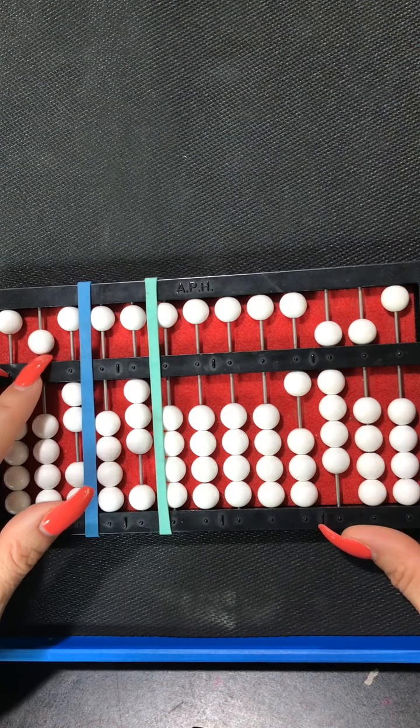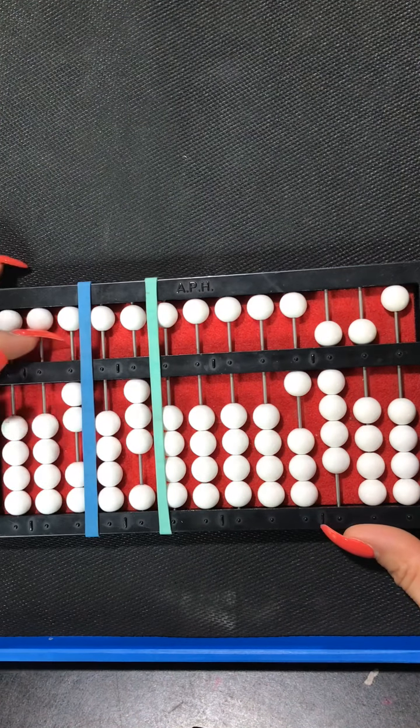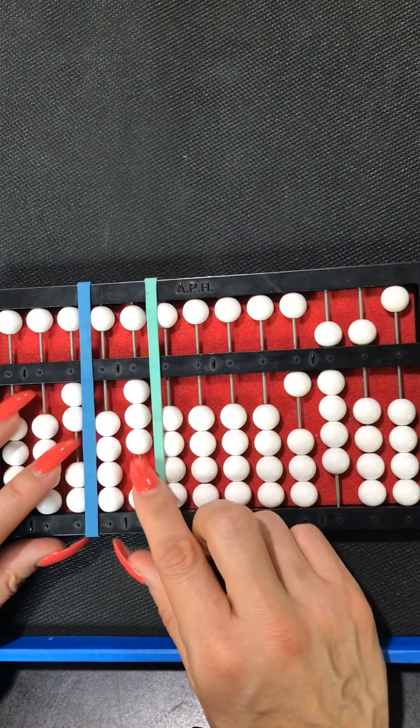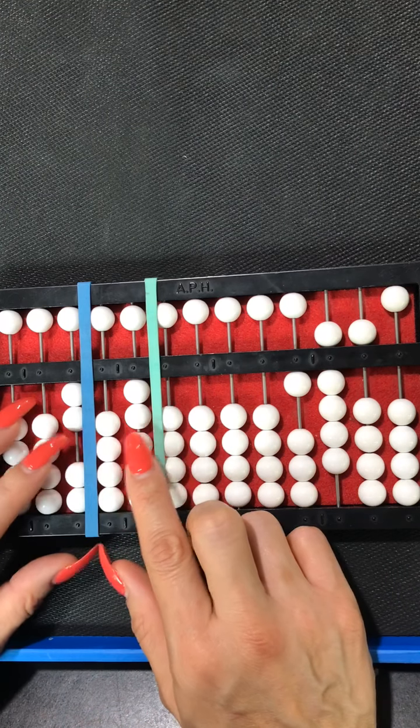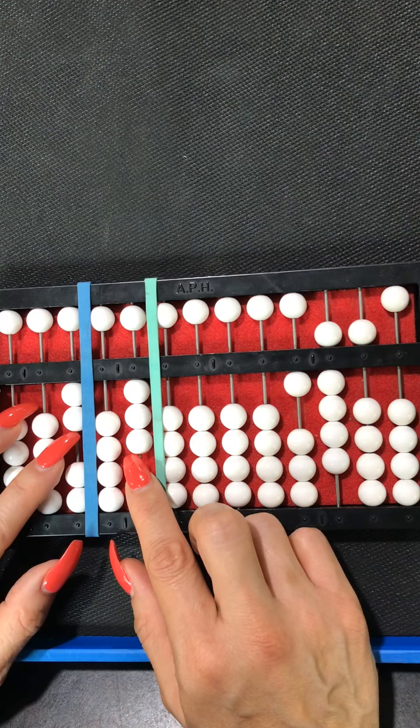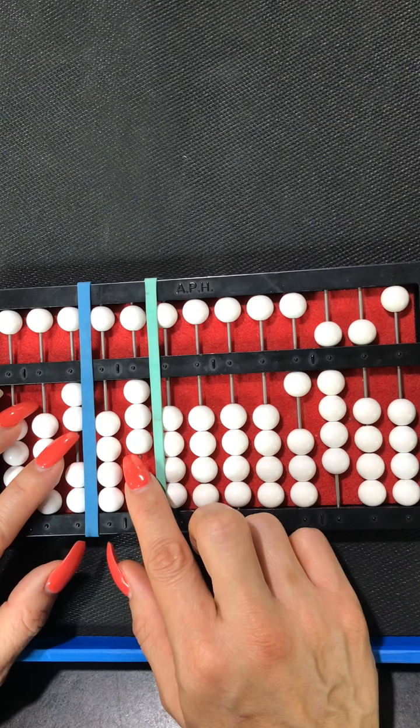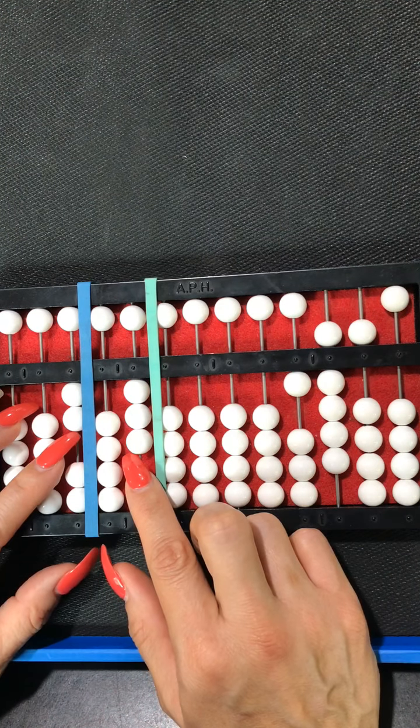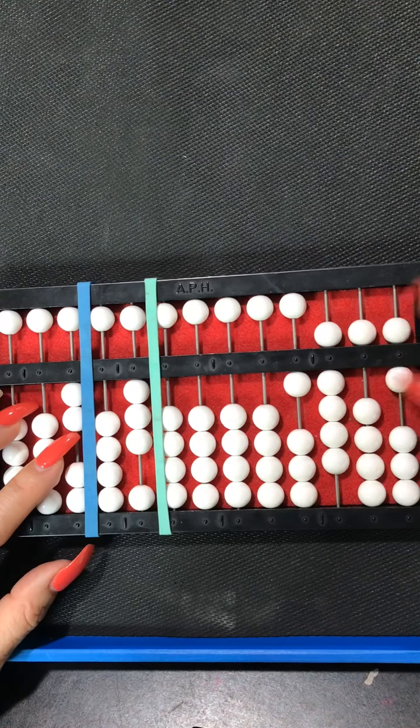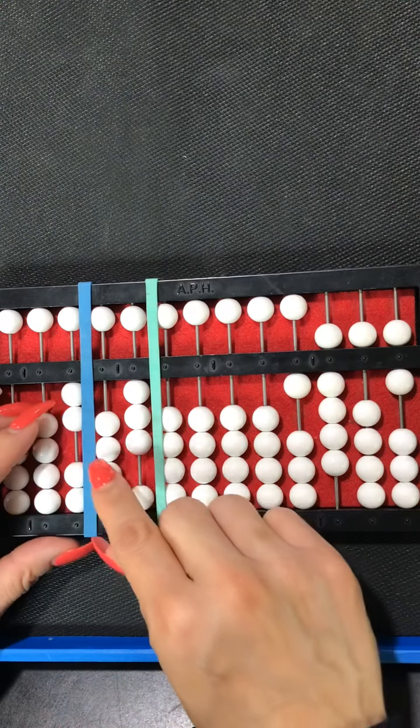And now we move on and say what's 3 times 2, 3 times 2 is yes it's 6 so we can set that directly. So go ahead and move to the right hand side and just set 6 for me and then on the left hand side we just clear that because we're done multiplying.